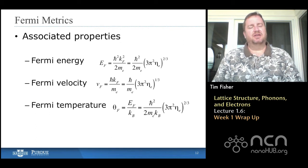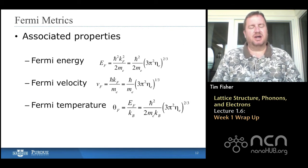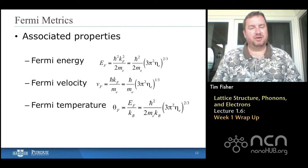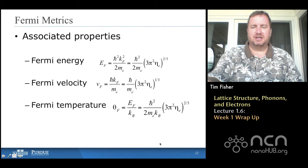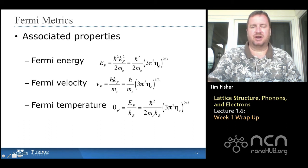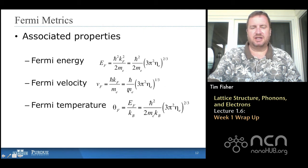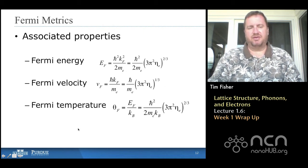And once we know how it fills k-space, we can understand how it fills energy space. And that produces, that analysis produces something called the Fermi metrics. And the most famous one is the Fermi energy, which is given here. Here, eta sub e is the electron density. That's the number of electrons per unit volume. The Fermi velocity, again, and the Fermi temperature all derive from this type of analysis.